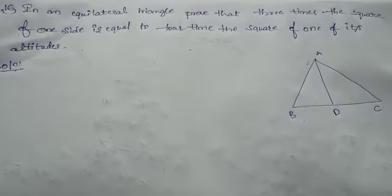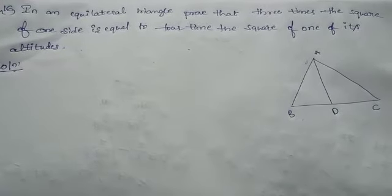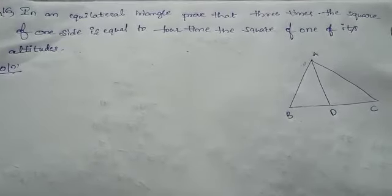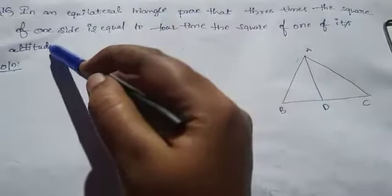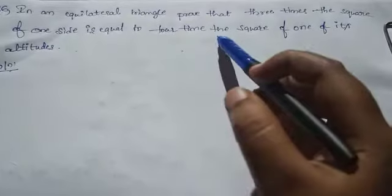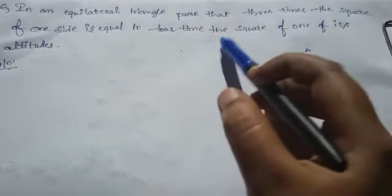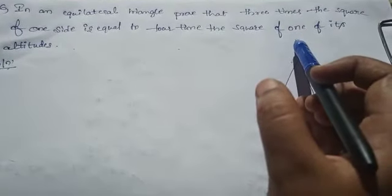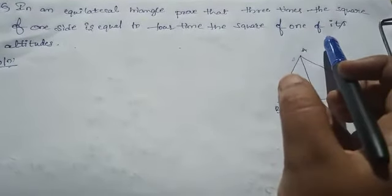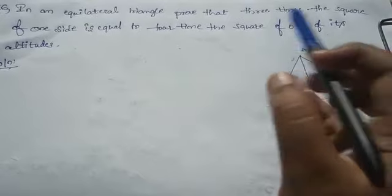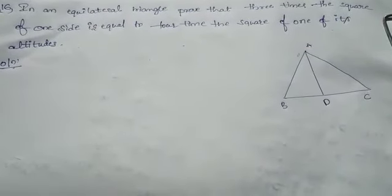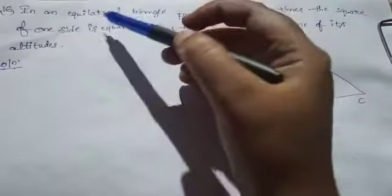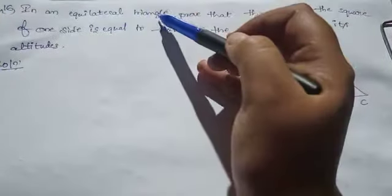Question number 16: In an equilateral triangle, prove that 3 times the square of one side is equal to 4 times the square of one of its altitudes. This is also a very important question. First, let's draw an equilateral triangle.